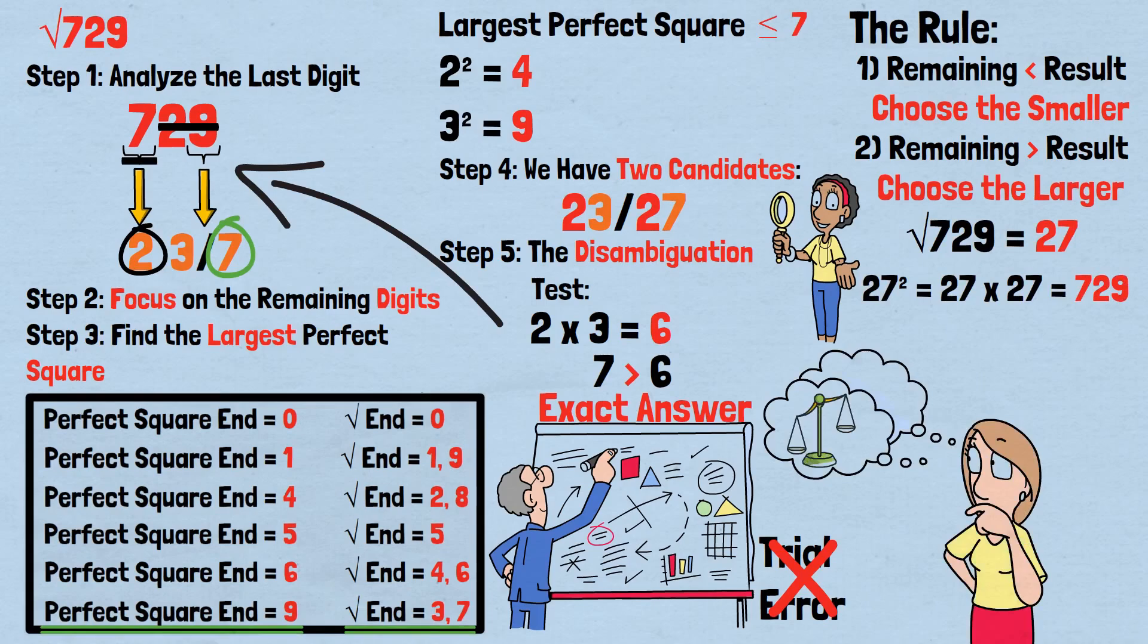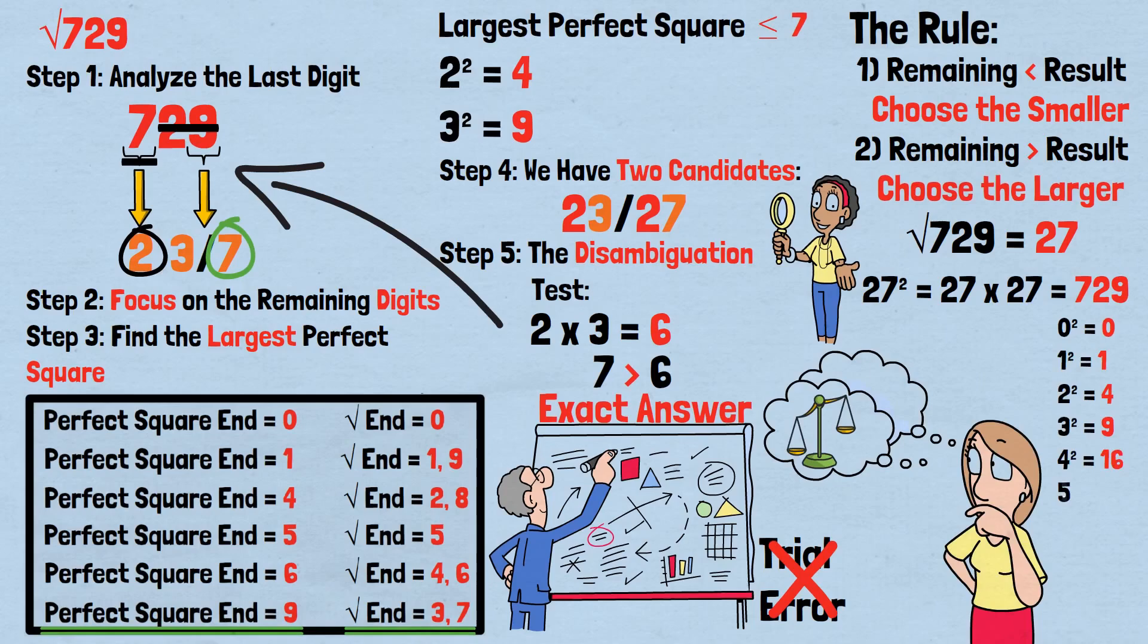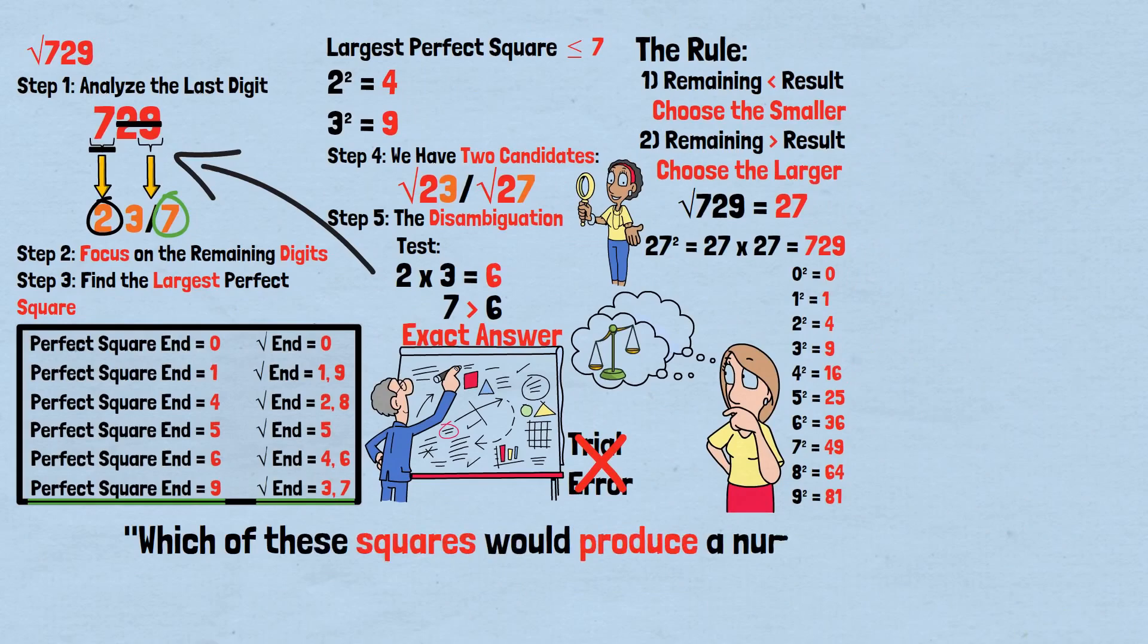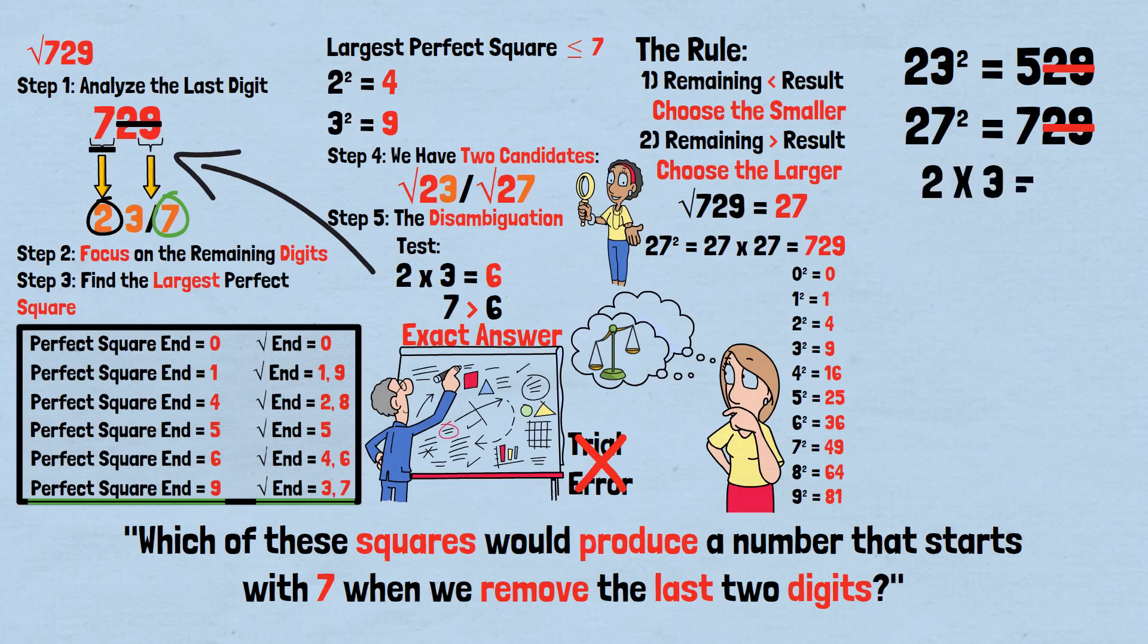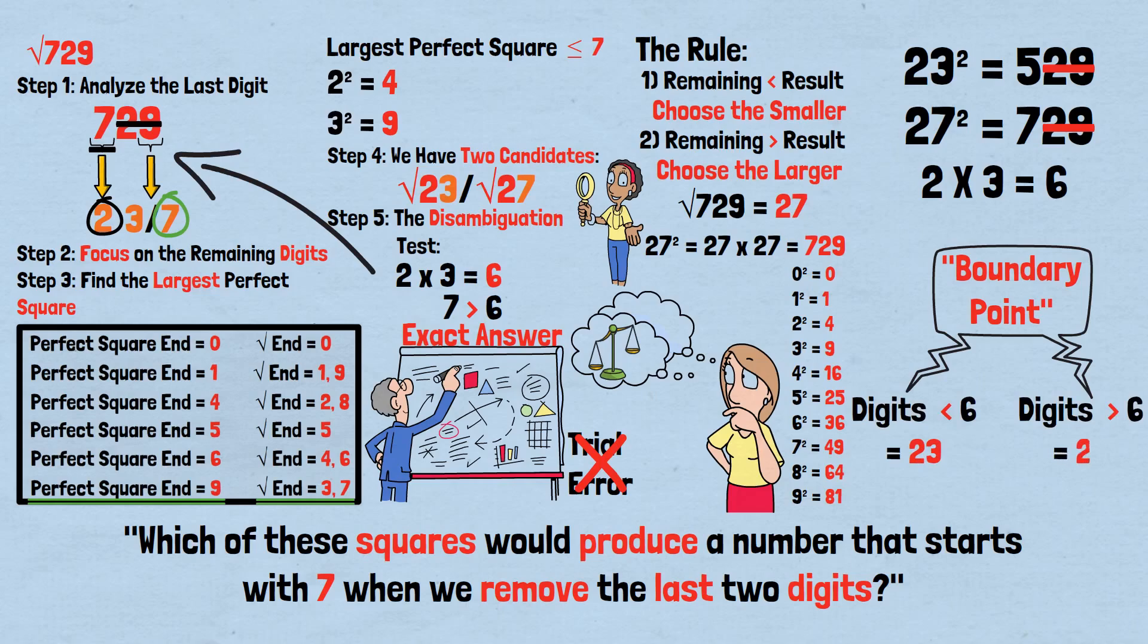You might wonder, why does this comparison test work? The answer lies in the structure of perfect squares and how they're distributed along the number line. When we have two potential square roots like 23 and 27, we're essentially asking which of these squares would produce a number that starts with 7 when we remove the last two digits. 23 squared equals 529—removing last two digits gives us 5. 27 squared equals 729—removing last two digits gives us 7. The comparison test with 2 times 3 equals 6 is actually finding the boundary point between these two regions. Numbers starting with digits less than 6 would correspond to the smaller square root, 23, while numbers starting with digits greater than 6 correspond to the larger square root, 27.